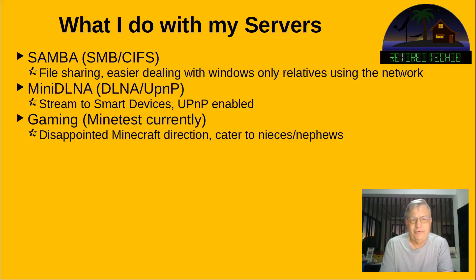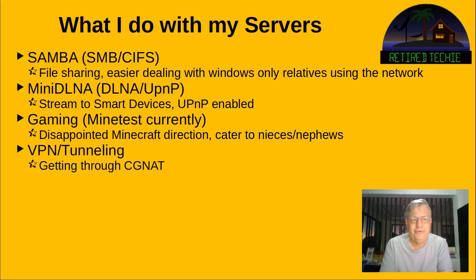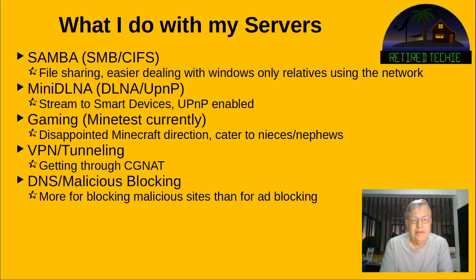Gaming — Minecraft specifically. I've been somewhat disappointed in the direction Minecraft has been going lately, but I still need to cater to my nieces and nephews who like playing it. VPN tunneling is another thing I do — I usually stick it on a separate computer. The main purpose is getting through the CGNAT that my ISP uses. Back when I was in the States I didn't have CGNAT, but it is a necessity here. DNS malicious blocking — I do this for blocking malicious sites and ad blocking, and I like having a local DNS caching server because it greatly speeds up internet browsing.